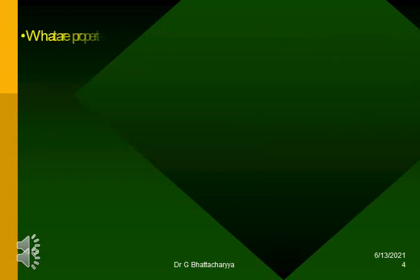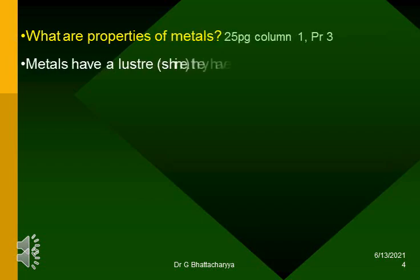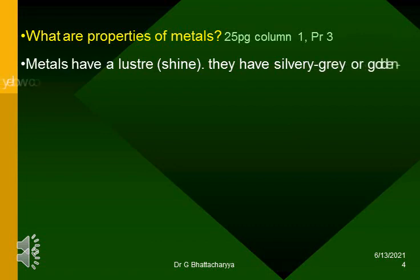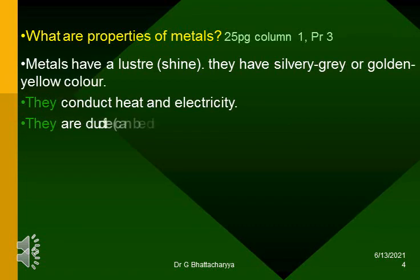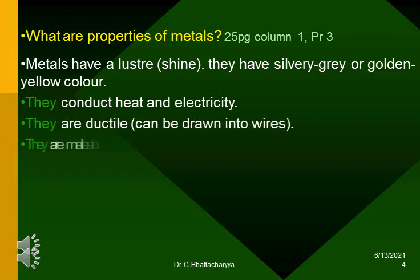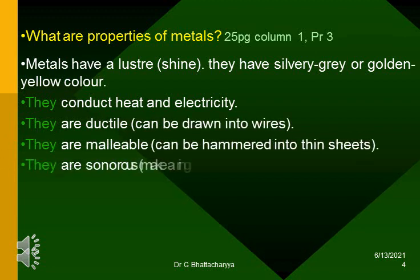What are properties of metals? Metals have a luster or shine. They have silvery gray or golden yellow color. They conduct heat and electricity. They are ductile — can be drawn into wires. They are malleable — can be hammered into thin sheets. They are sonorous — make a ringing sound when hit.